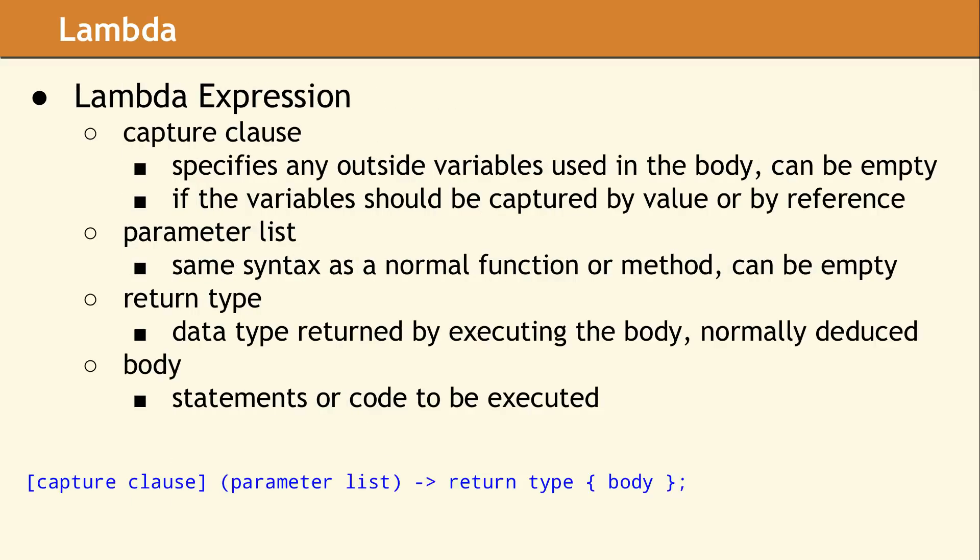The first part of the lambda expression is the capture clause. This specifies which outside variables will be available inside the body of the lambda. It is not necessary to capture any data, however, the square brackets are still required, even if the capture clause is empty. Next comes the parameter list, which is very similar to the parameter list for a normal function. This is optionally followed by an arrow and the return type. If no return type is specified, the return type will be deduced.